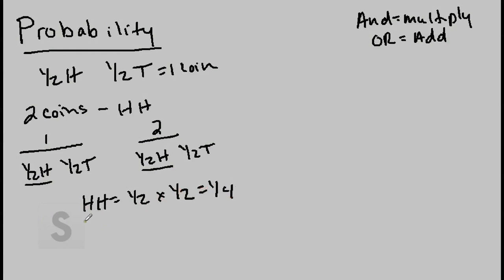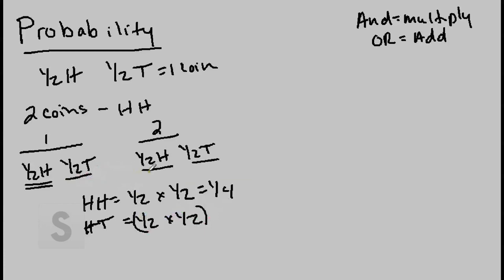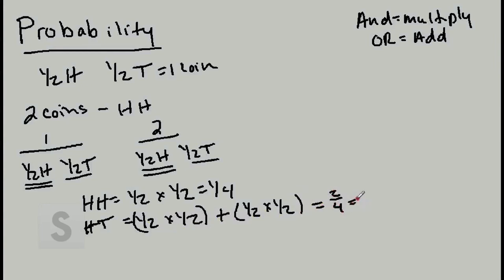What's the probability of getting one head and one tail in any order? You have a half a chance of heads from the first coin and a half a chance of tails from the second coin — that's one half times one half. Or you could get a tail from the first coin and a head from the second — another one half times one half. When you see the word 'or,' you add. So one fourth plus one fourth equals two fourths, or one half.